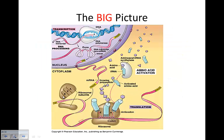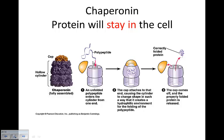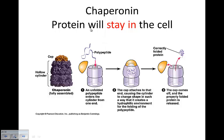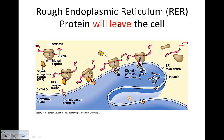Post-translation refers to the protein folding that occurs for the protein to be functional. If the primary sequence enters a chaperonin — a smaller water-free container — the protein folds and stays inside the cell. If the primary sequence enters the rough endoplasmic reticulum, the protein is going to leave the cell and be exported out. So there are two choices: the protein either stays in the cell or it leaves the cell.